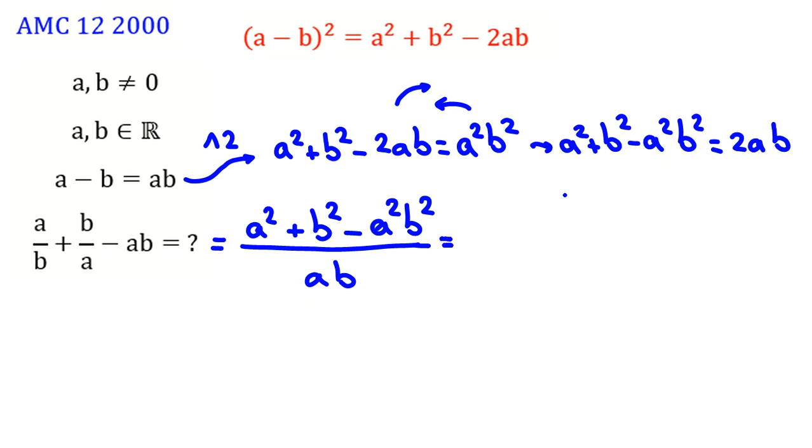And if I replace the numerator with 2AB, it will be 2AB, because this part equals exactly this part. So 2AB over AB, which equals 2. So the answer is 2.